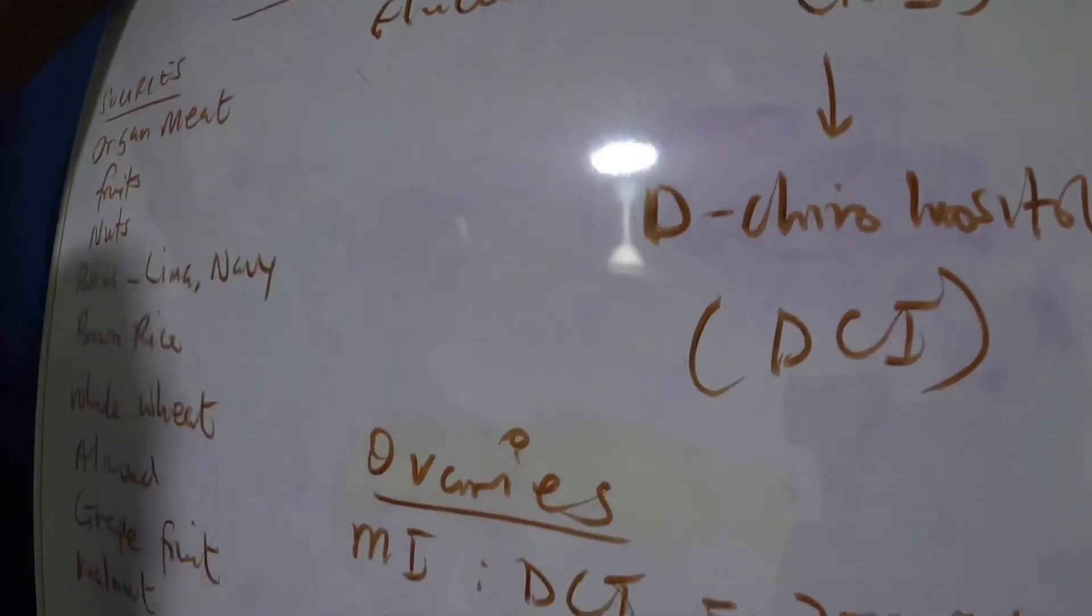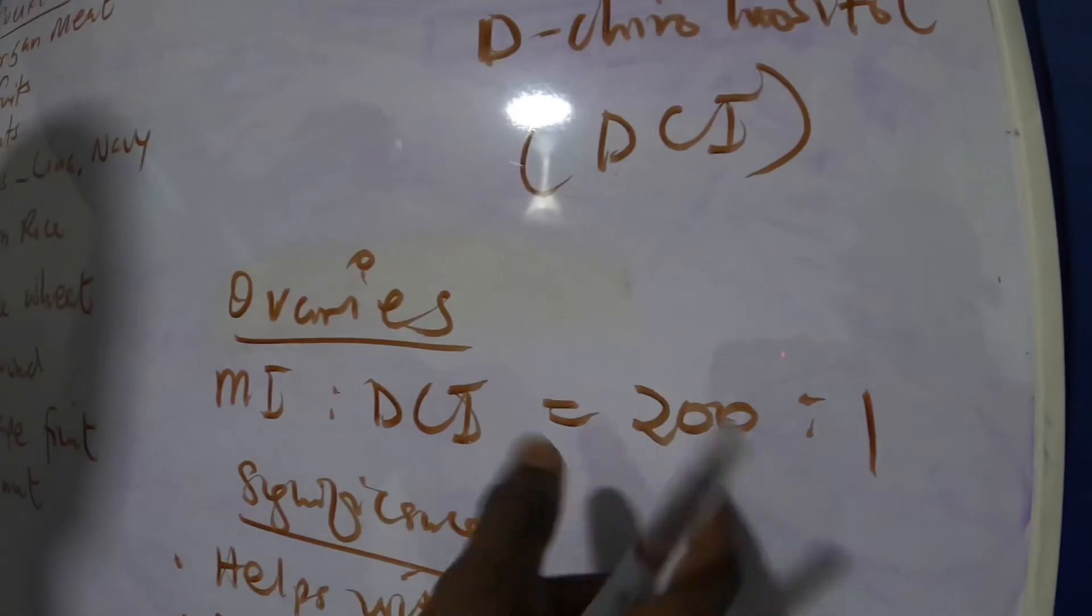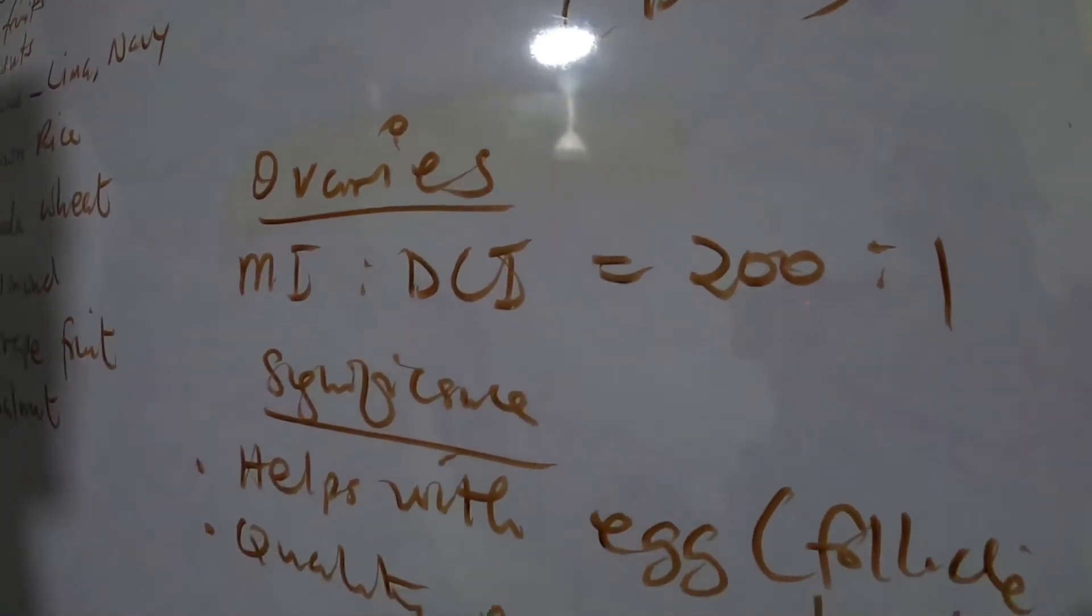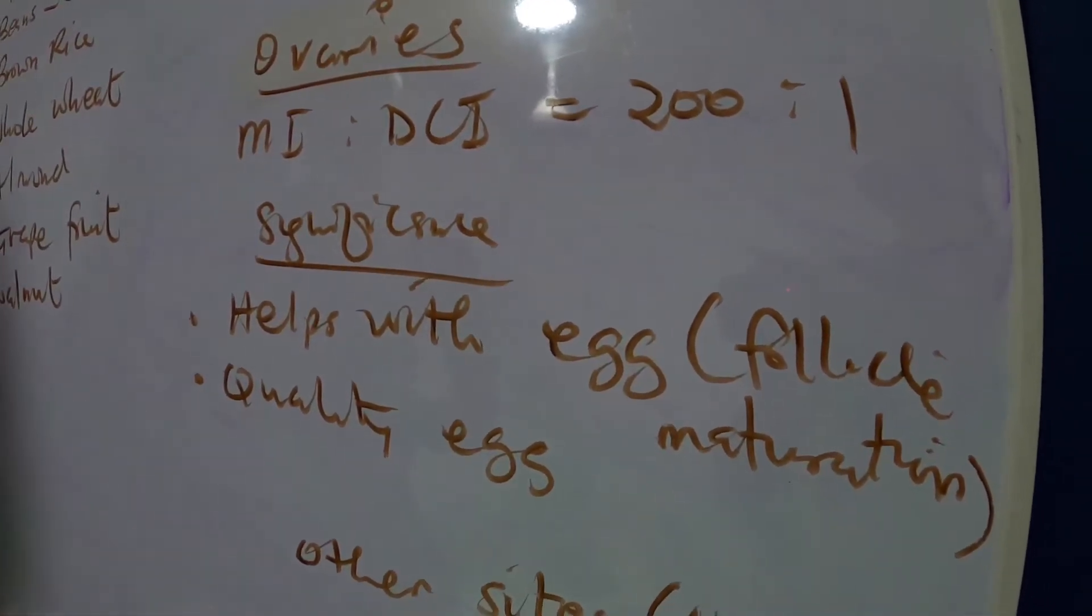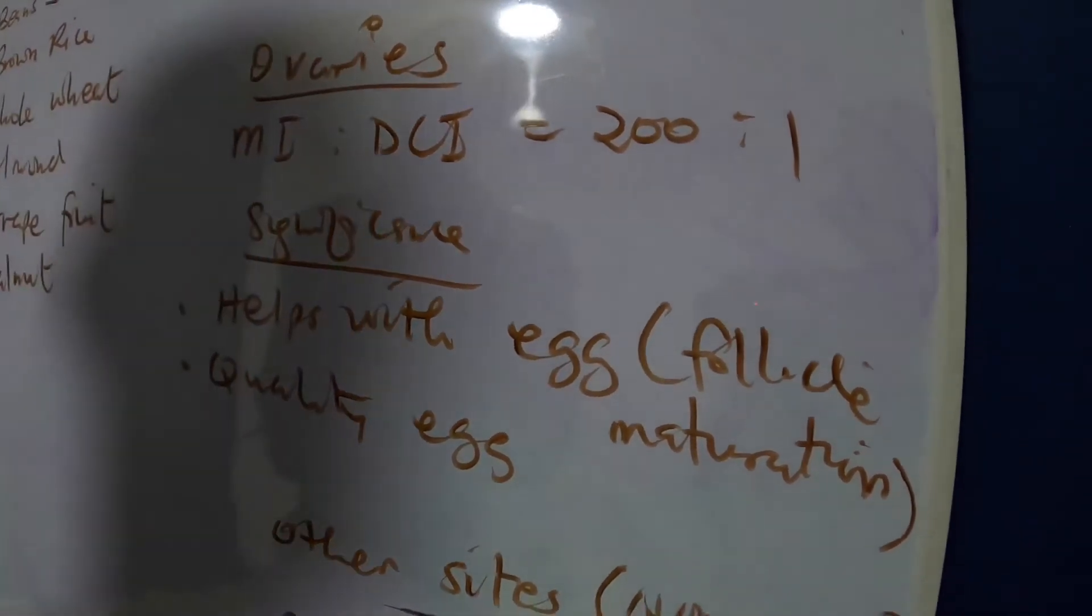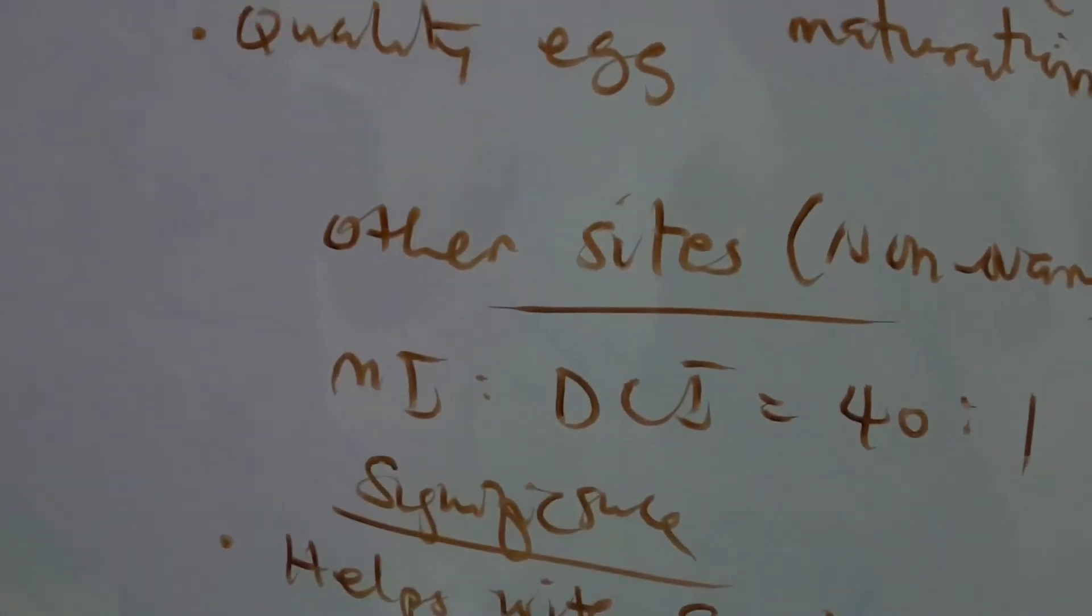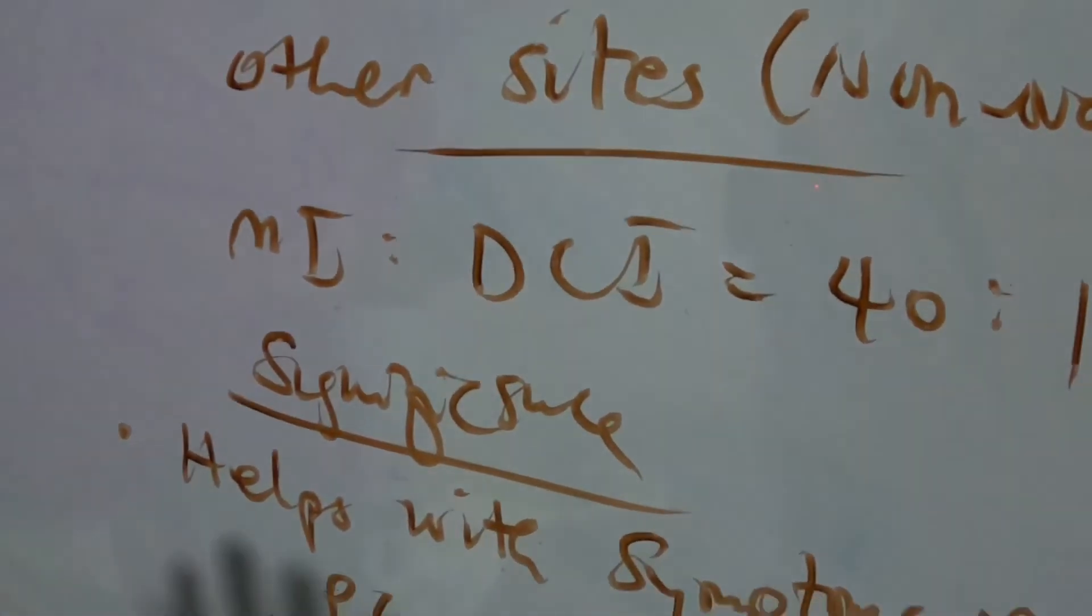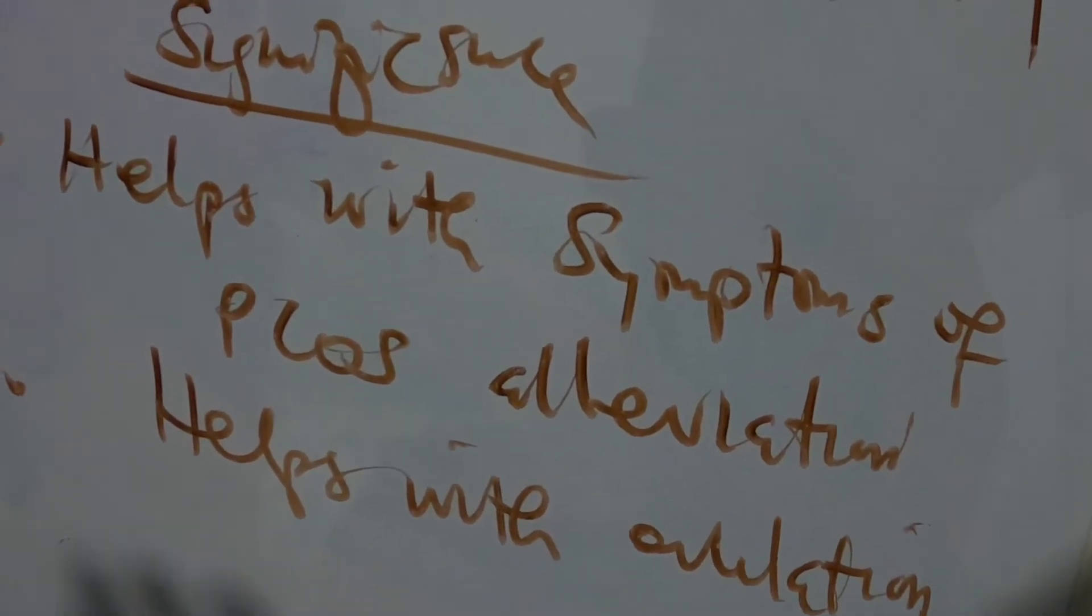In the ovaries, usually the MI to DCI ratio is around 200 is to 1, and the significance of this is to help with egg or follicle maturation and also improve the quality of eggs. From other sites, the non-ovary sites, the MI to DCI ratio is 40 is to 1, and the significance is to help with symptoms of PCOS alleviation and also helps with ovulation.